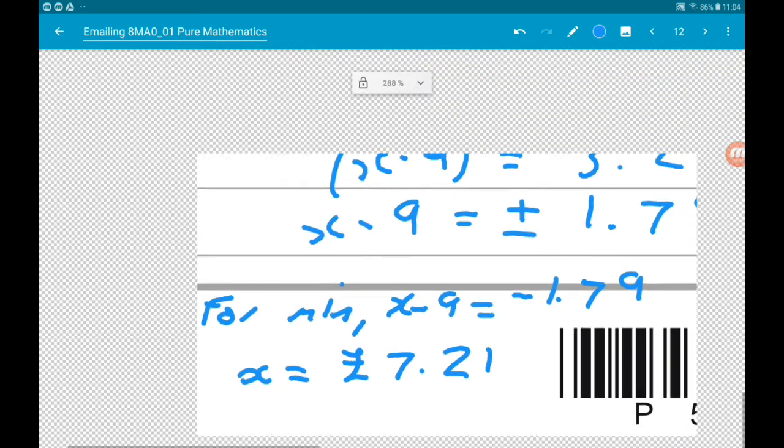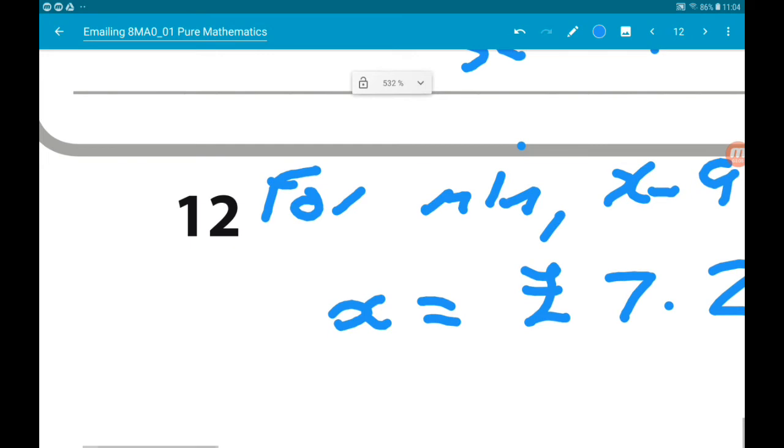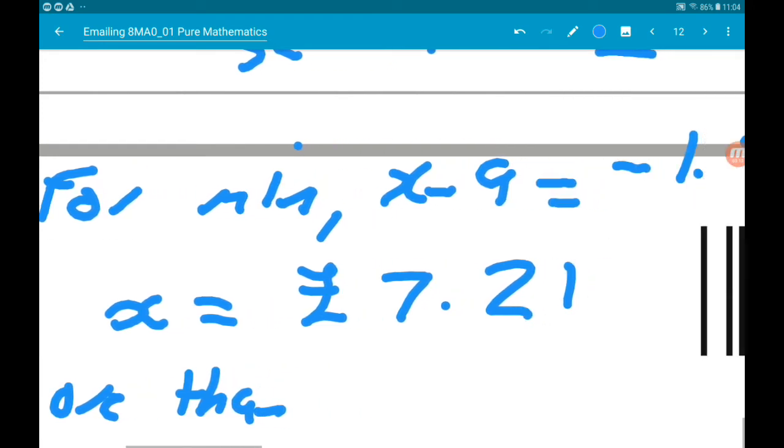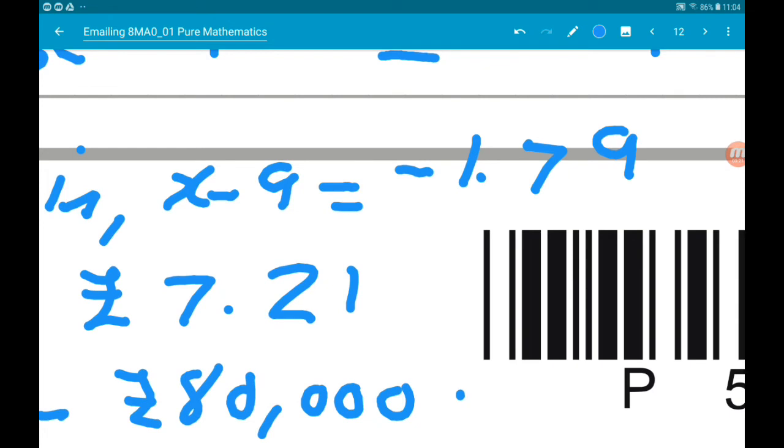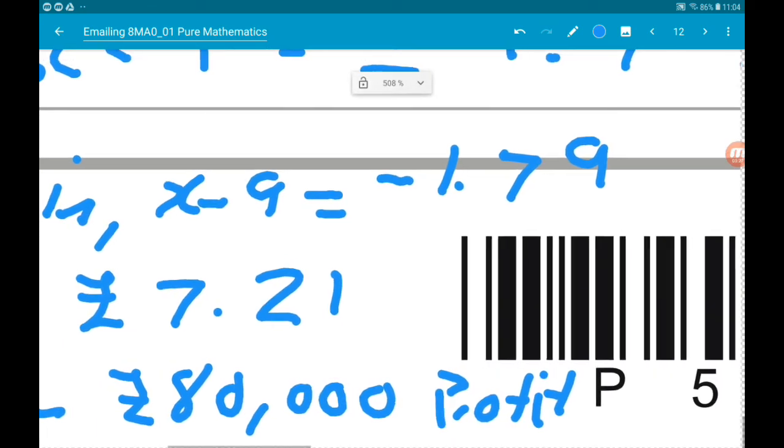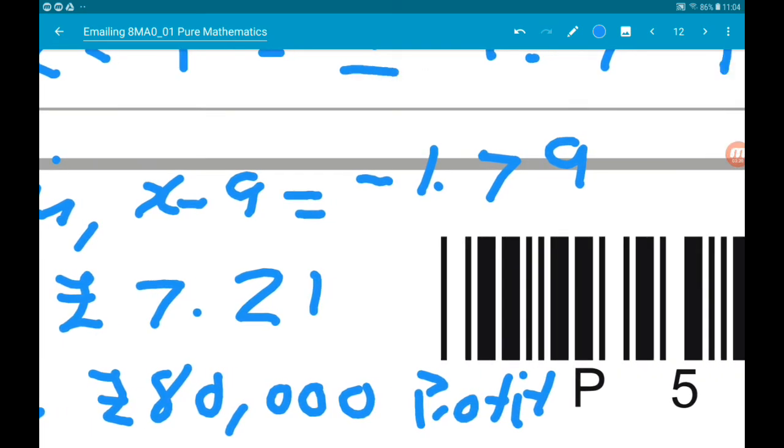Now for more than 80,000 profit, the minimum value of x would be 7.22.